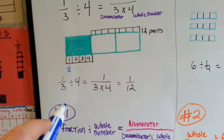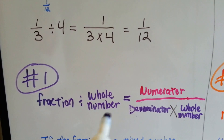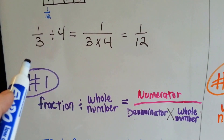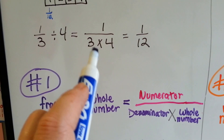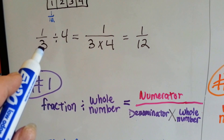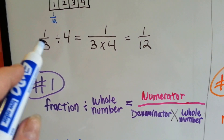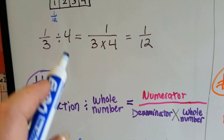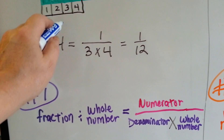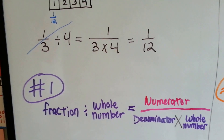Here's what I want you to remember: when you see a fraction divided by a whole number, think of it as the numerator over the denominator times the whole number. Any time you see a fraction divided by a whole number where the fraction is first — it's the dividend and the whole number is the divisor — think of it as the numerator on top of the denominator and the whole number and just do your multiplication.